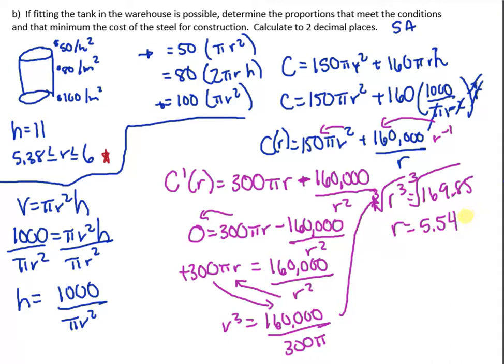So this value is within the given domain. So 5.54 is in that r. So what we have to do now is we have to plug in these three values. The two endpoints, which is the cost at 5.38, the cost at 5.54, which is not an endpoint but that's where our max or min occurs, one of the local max or min, and we have to calculate the cost at 6.